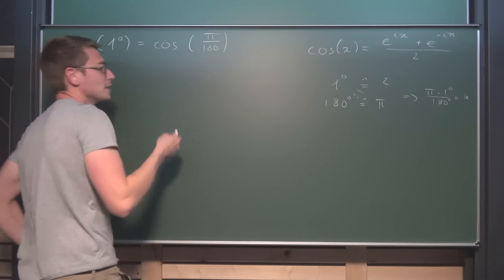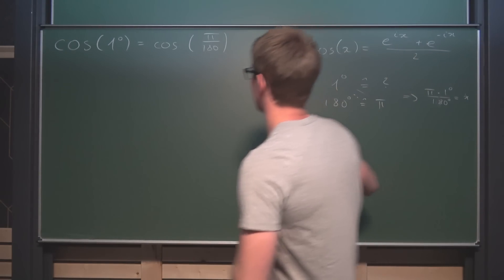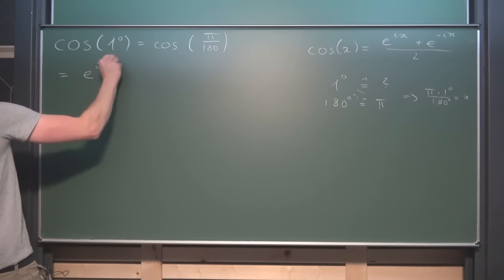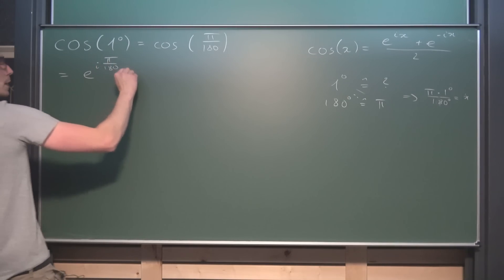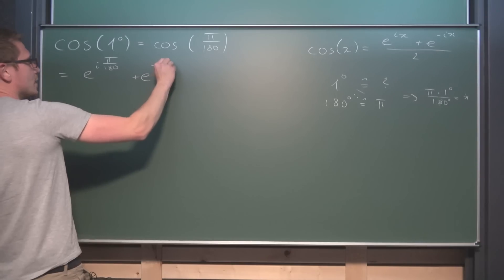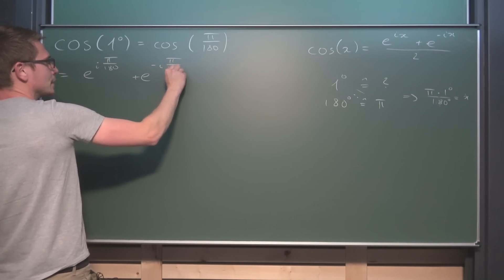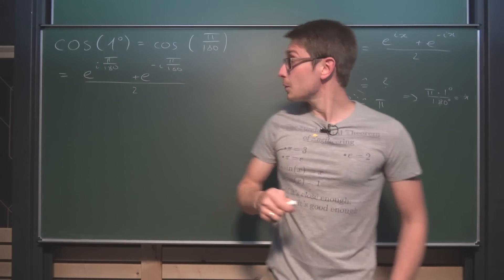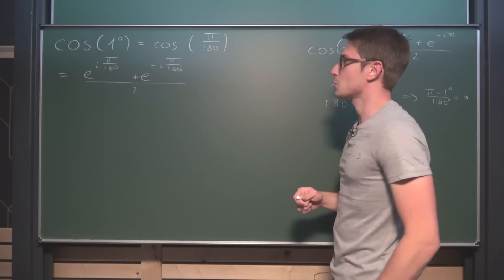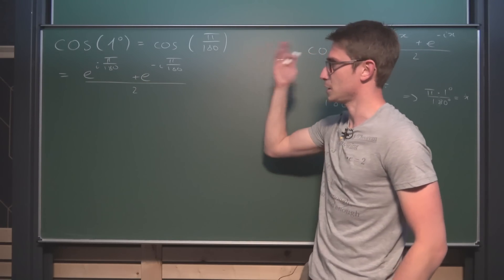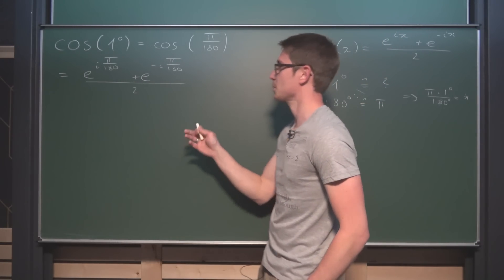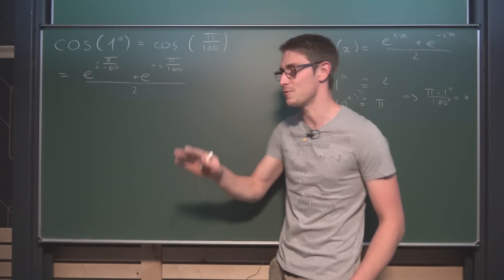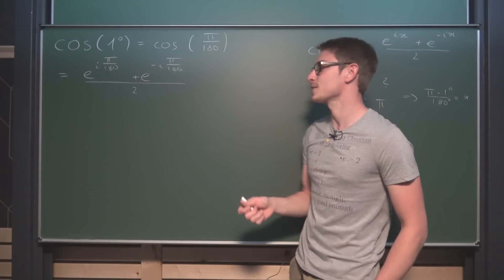So cosine of one degree is the same as cosine of π divided by 180. We can work with this — plug it into the Euler definition, giving us overall e to the iπ over 180 plus e to the negative iπ over 180, divided by 2. That's a closed expression. But we won't stop here because this still looks way too clean.